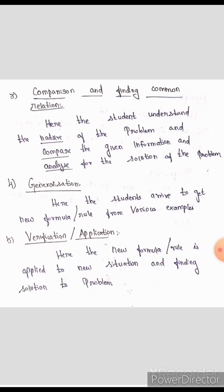After that, Step 3 is Comparison and finding common relation. Here the students understand the nature of the problem — how to solve the problem. They understand and compare the given information and analyze it for the solution of the problem.